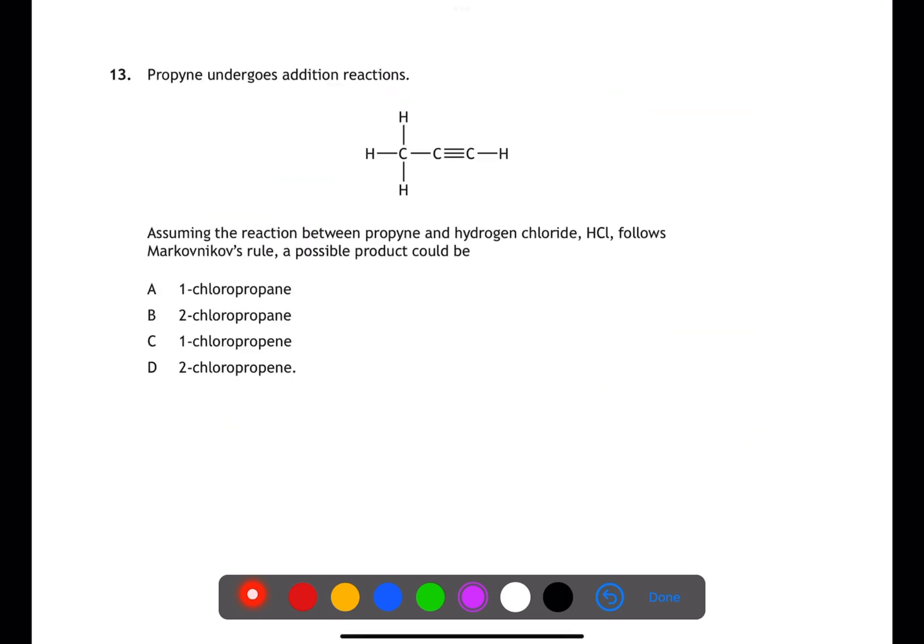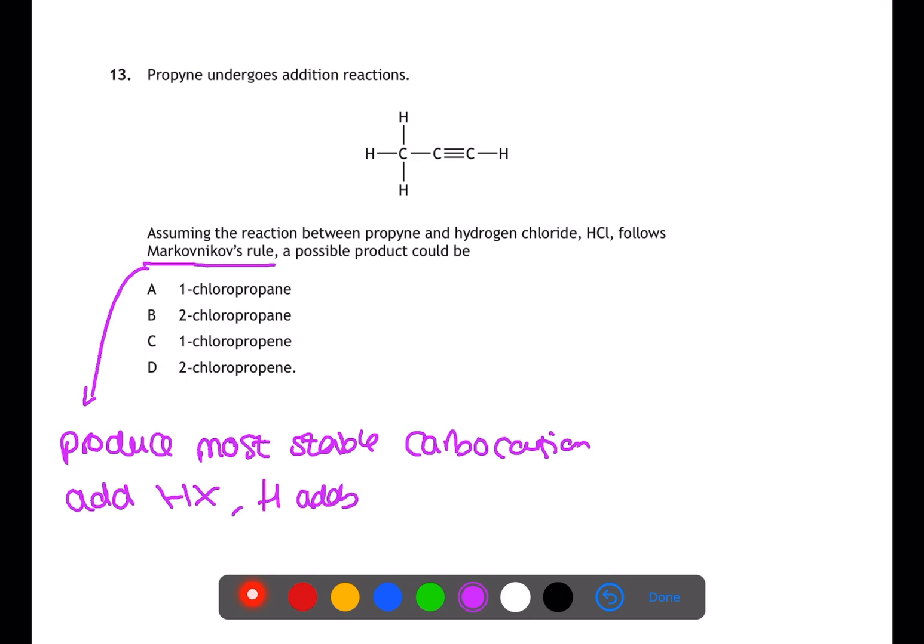Question 13 is looking at an addition reaction. We need to know what Markovnikov's rule means to be able to answer this question. Markovnikov's rule will produce the most stable carbocation intermediate. In reality this means that when you add HX across a double or triple bond the hydrogen atom will add to the carbon which already has the most hydrogen atoms. If we apply this to this molecule then the H will add on to carbon one and the Cl will add on to carbon two. This will leave us with still a double bond and therefore we will have 2-chloropropene.